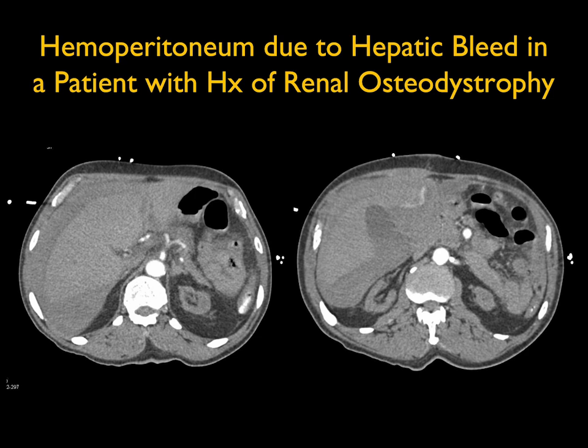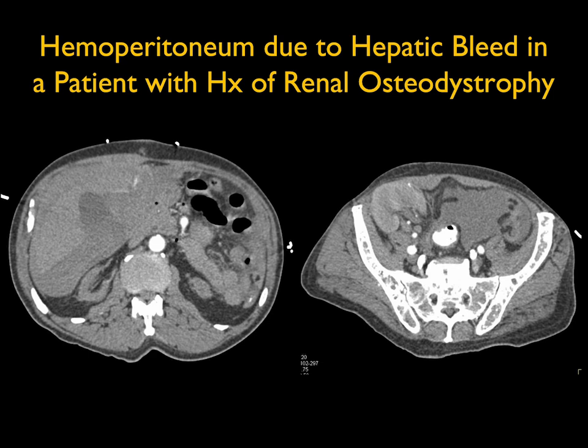Case 10: a large hemoperitoneum with active bleeding anteriorly off the left lobe of the liver. The first questions I would ask in this patient with end-stage renal disease: did the patient have a recent biopsy, or did the patient have trauma? You can see renal osteodystrophy and a transplant kidney functioning well in the right lower quadrant. When I see a spontaneous bleed with active bleeding I look carefully at the liver for a tumor — tumors that can bleed include hepatoma, hemangioma theoretically, and hepatic adenoma, which is always at the top of the list.